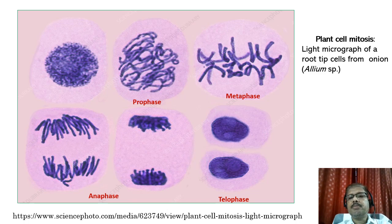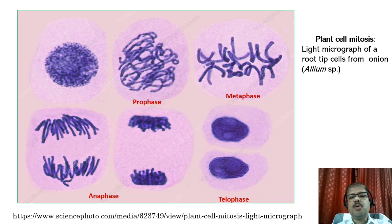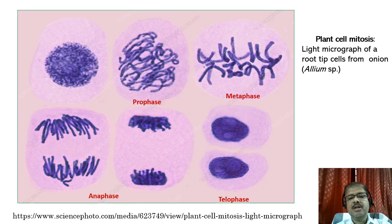This is a light micrograph of a root tip cell squash preparation from onion (Allium cepa) showing cell division — mitosis. From top left to bottom right: the chromosomes condense and appear as long thread-like structures in prophase; they align along the center of the cell in metaphase; each chromosome consists of two identical sister chromatids that separate and are pulled to opposite ends in anaphase; then the nuclear membrane forms around the two daughter nuclei as chromosomes decondense in telophase.